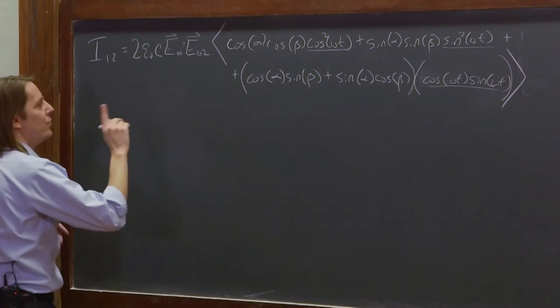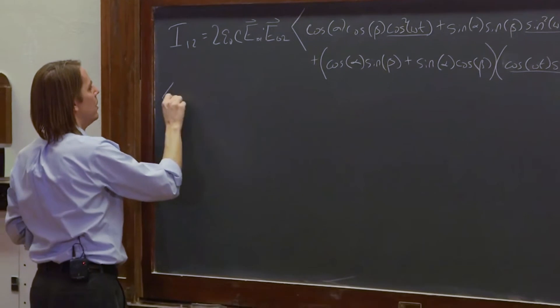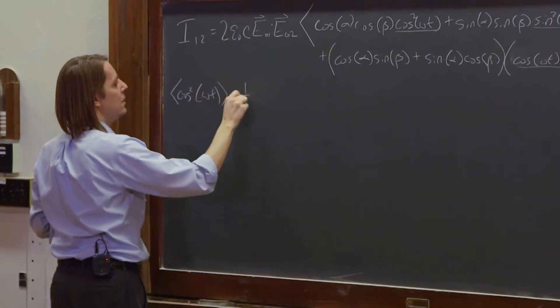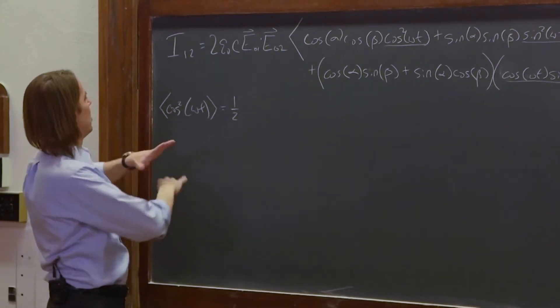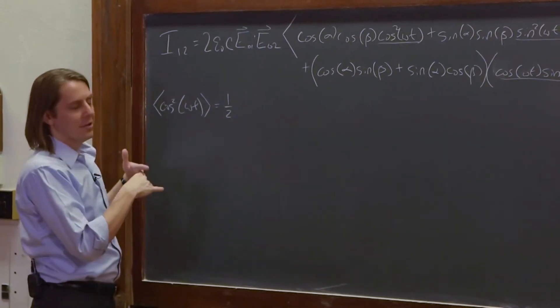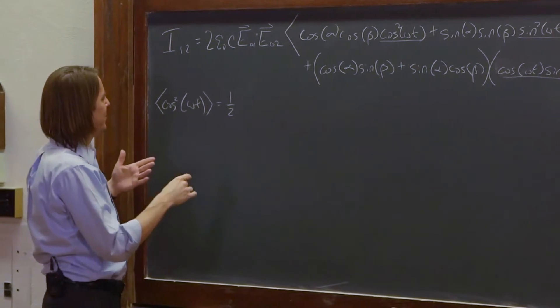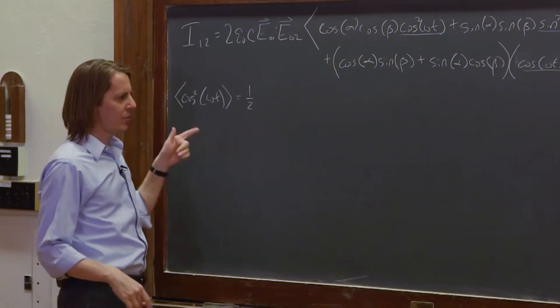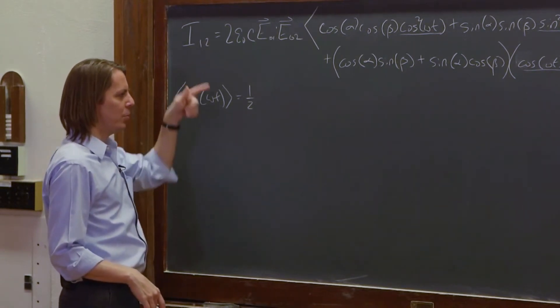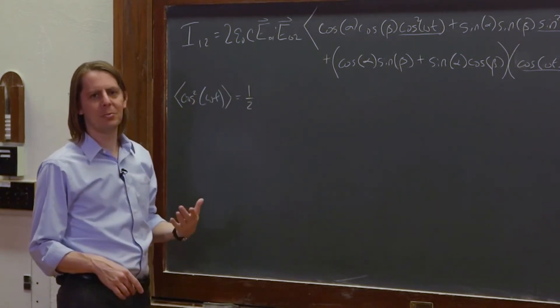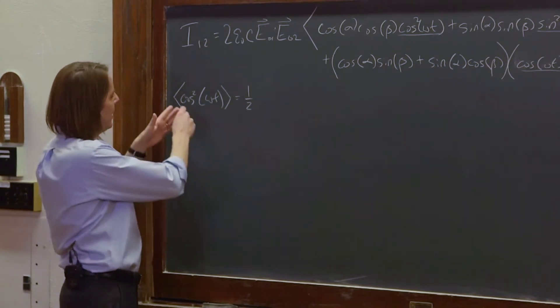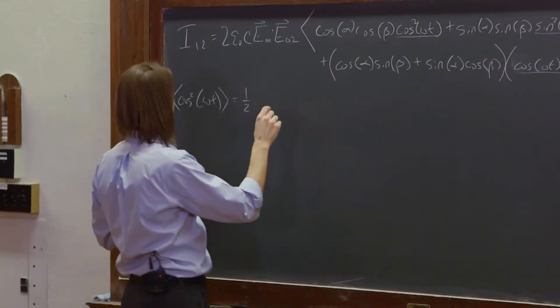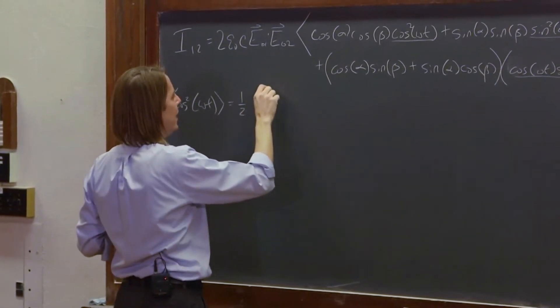And those are actually well known. So the time average of cosine squared omega t is a half. You can do the integral, you can look it up in a table, or you can think about it. Cosine squared omega t is always greater than zero and it oscillates uniformly between 0 and 1, so the average value probably should be a half. And keep in mind, this is the time average over many, many cycles. But over many cycles, cosine squared averages to a half. And sine squared omega t over many cycles also averages to a half.